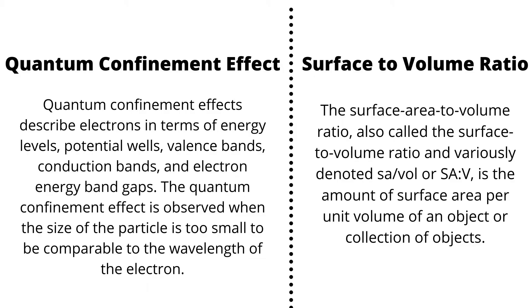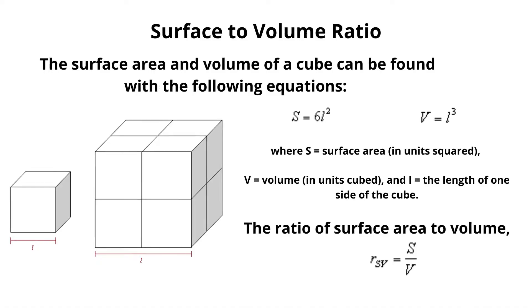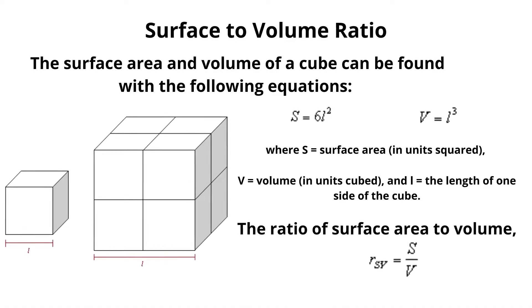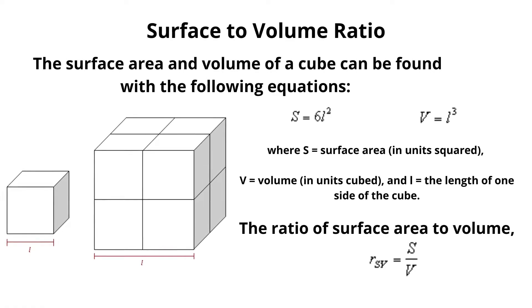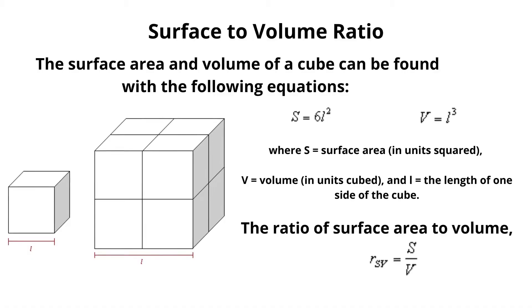Let us start by understanding the meaning of the surface to volume ratio. In simple terms, it is a mathematical term where the surface area of an object is divided by its total volume to arrive at a mathematical quantity indicative of how much of the material that makes up the object is occluded from external interactions.